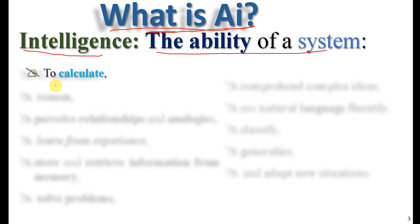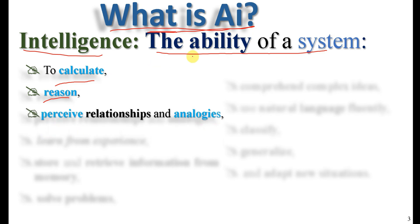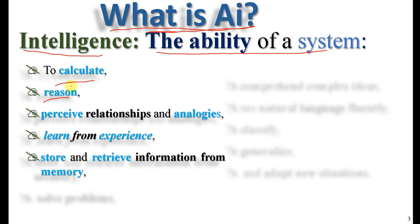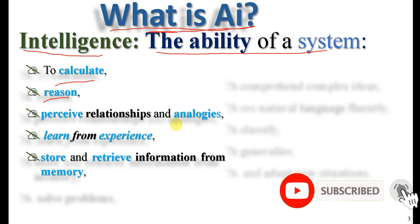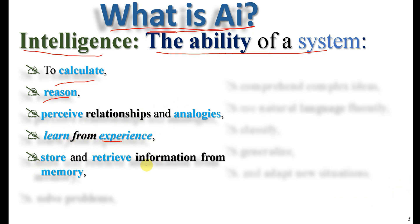The ability of a system includes the ability to reason, perceive relationships and analogy — relationship patterns and analogies are perceived as a result. It also includes the ability to learn from experience, store and retrieve information from memory.